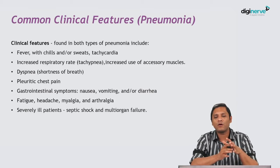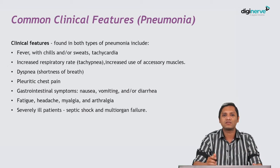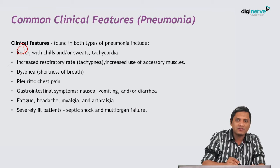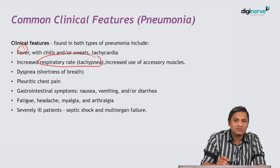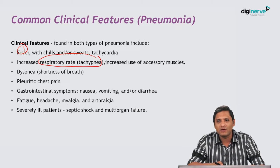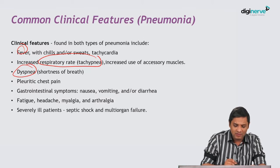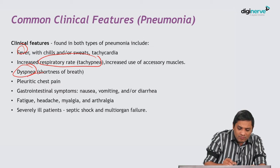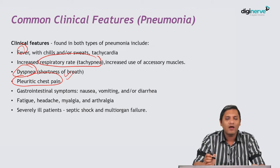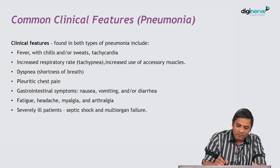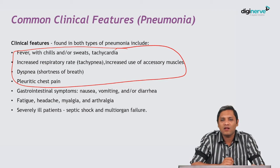Whether it is lobar pneumonia or interstitial pneumonia, they share some common clinical manifestations such as fever with chills and rigors. Increased respiratory rate is the most consistent manifestation. You will also have dyspnea, shortness of breath, difficulty in breathing, and pleuritic chest pain. These four are the common manifestations of both lobar and interstitial pneumonia.